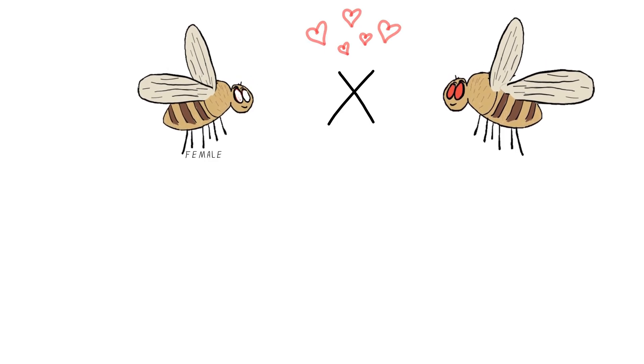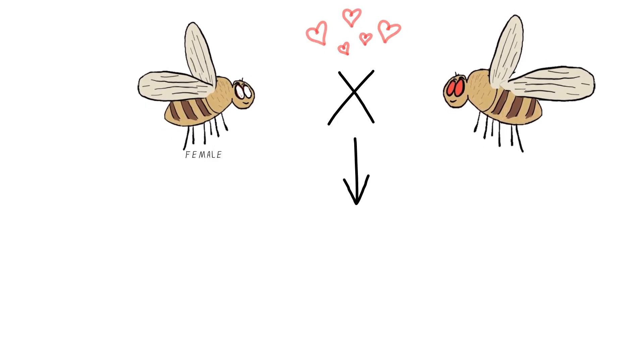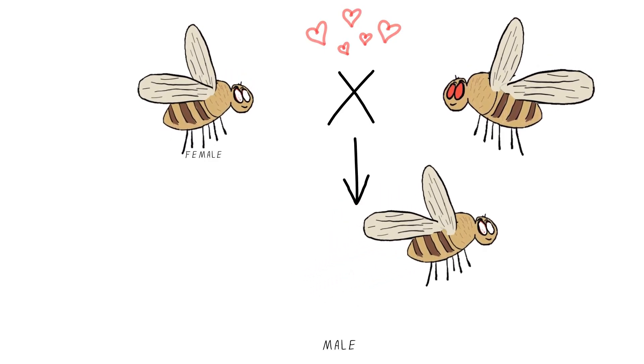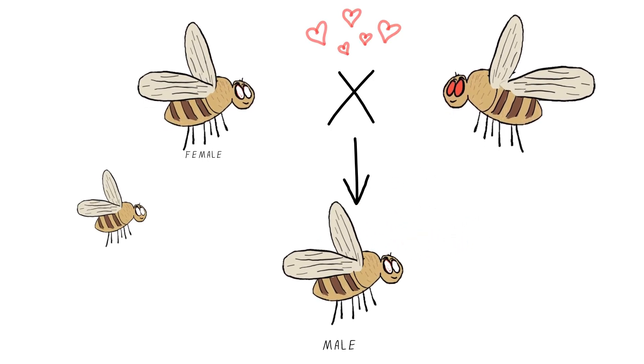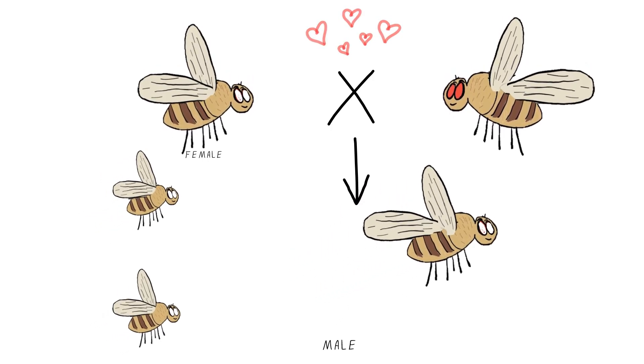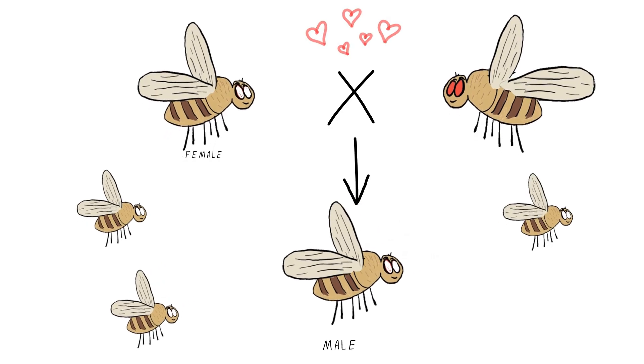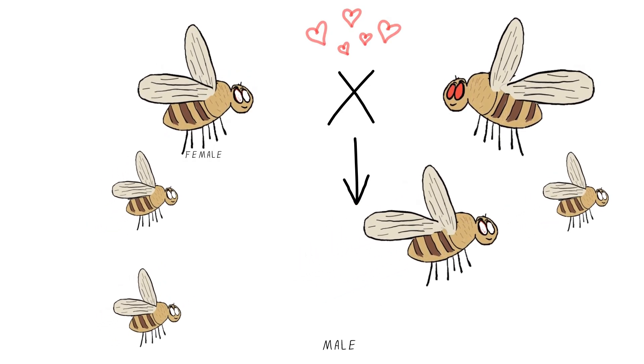This allowed Muller to follow the mutations through generations, particularly in males who would display the phenotype. These mutations were observed in several subsequent generations, showing that reverse mutations were not occurring to fix the mutations previously caused by x-rays.